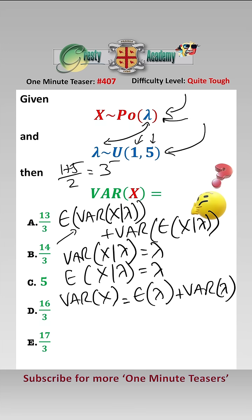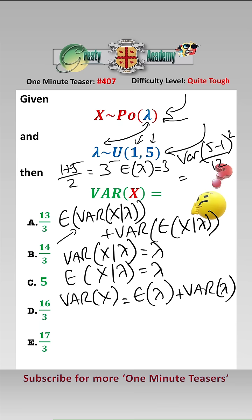So the expected value of λ is 3. The variance of a uniform distribution is (5 − 1)² / 12, which equals 4/3.